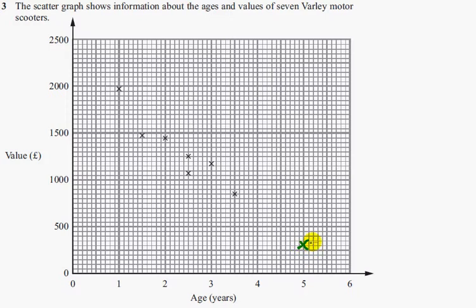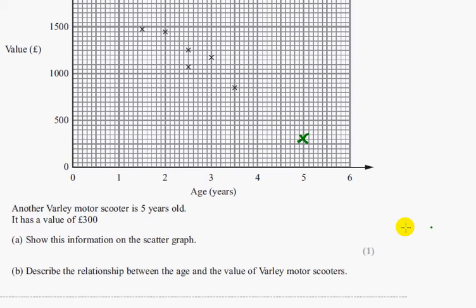You can be half a square in either direction out and then you'll still get the mark. But it really has to be fairly accurate. So that's worth 1 mark. Easy 1 mark.